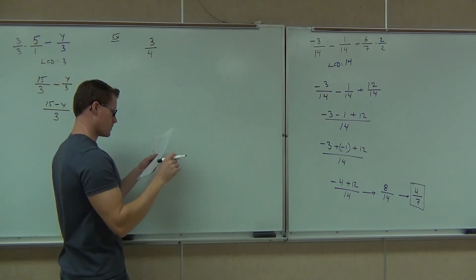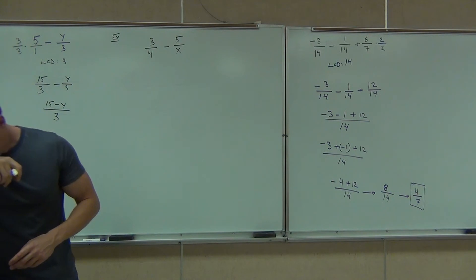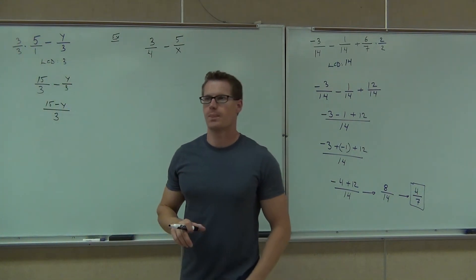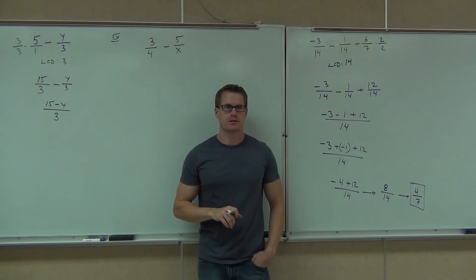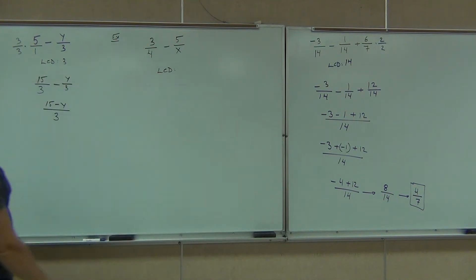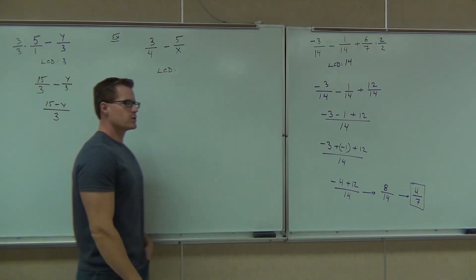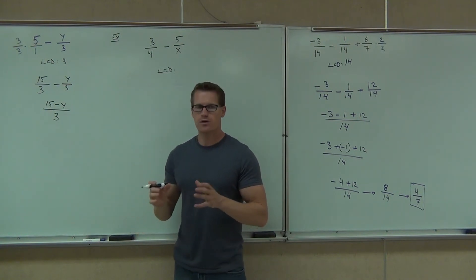I think you guys are ready for this. Let's try one more. Okay, let's focus on the board. We've got 3 fourths minus 5 over x. What do you need in order to add or subtract fractions? Common denominators. Does it have a common denominator right now? No. We've got to find out what our LCD is in this case.